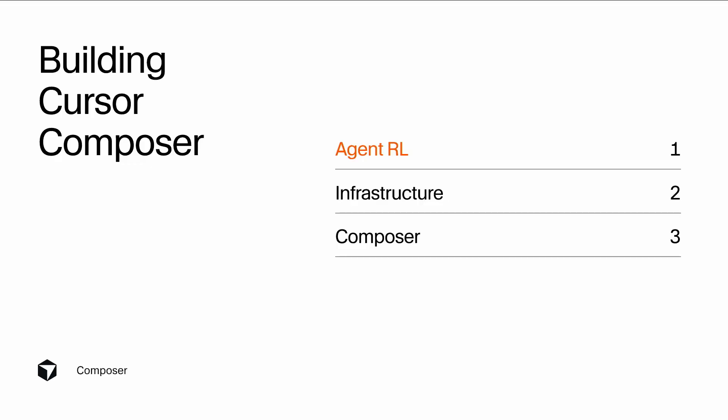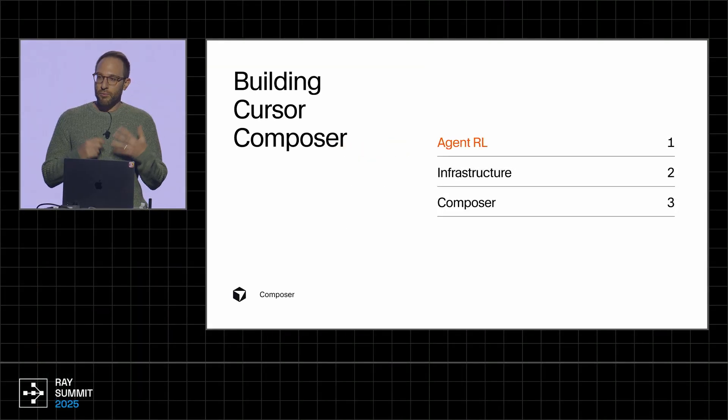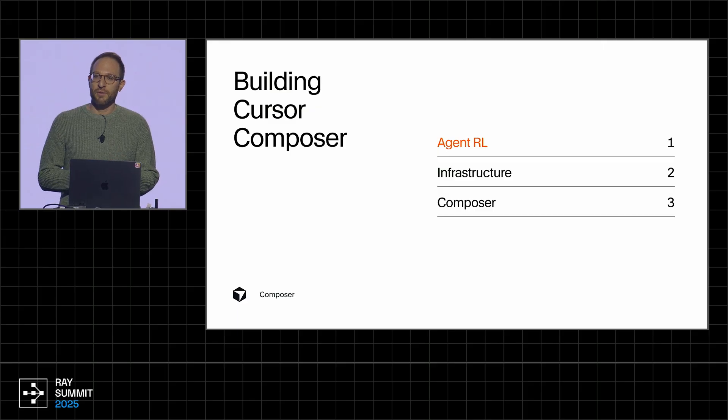In today's talk, I want to cover some of the work that the team at Cursor did to build this model. I'm going to begin by giving a quick overview of what we mean when we talk about agent RL. Then I'll talk about how infrastructure was a key force to ship this model. And finally, I'll talk about what we learned building Composer and where we're going moving forward.